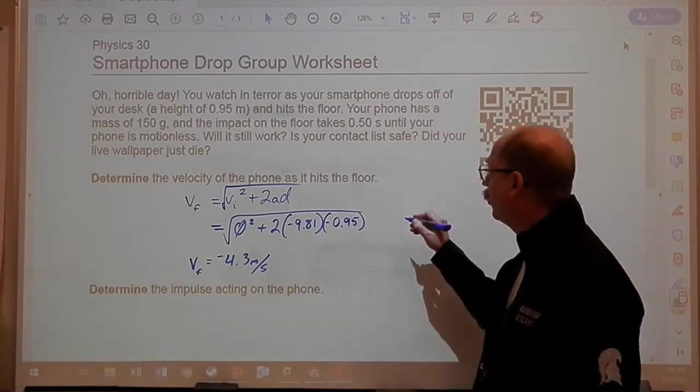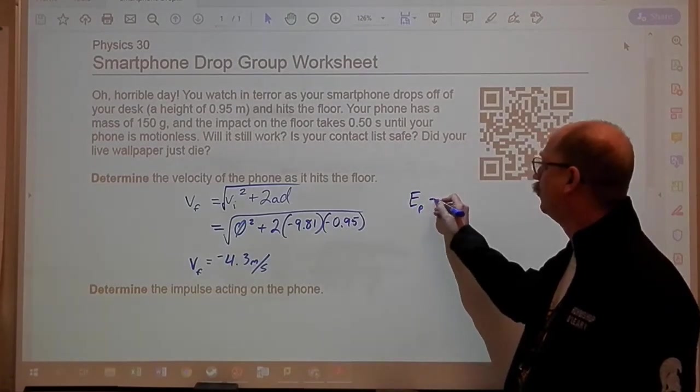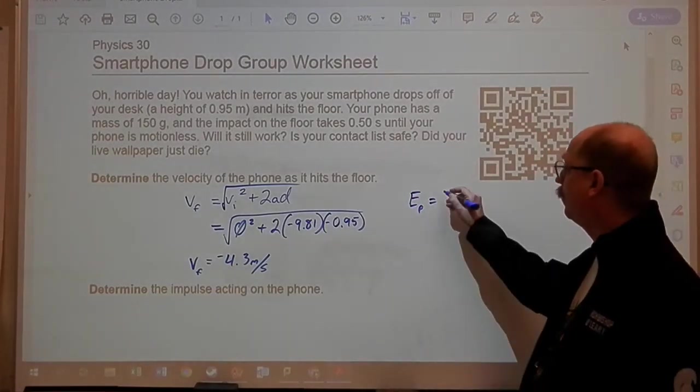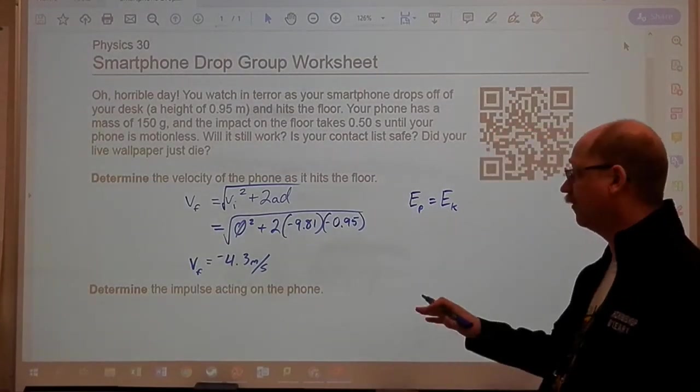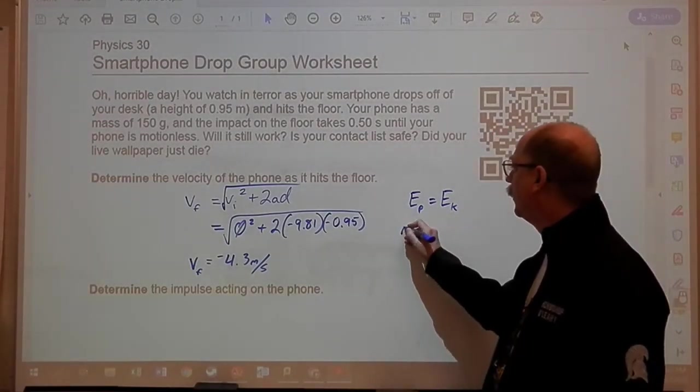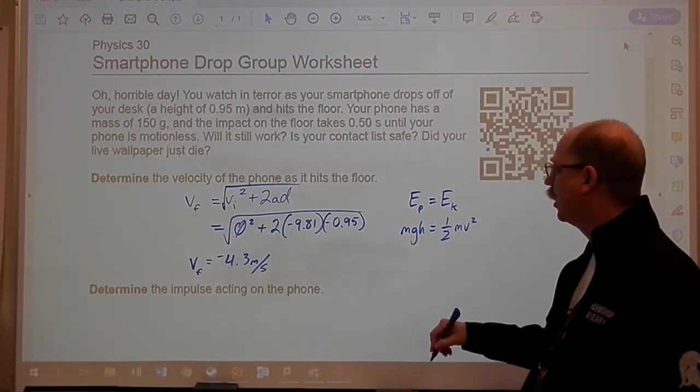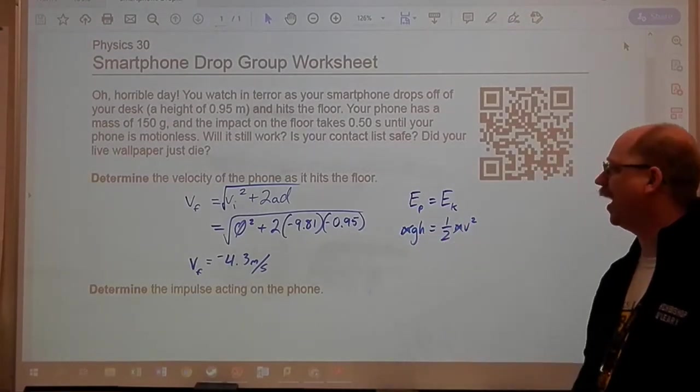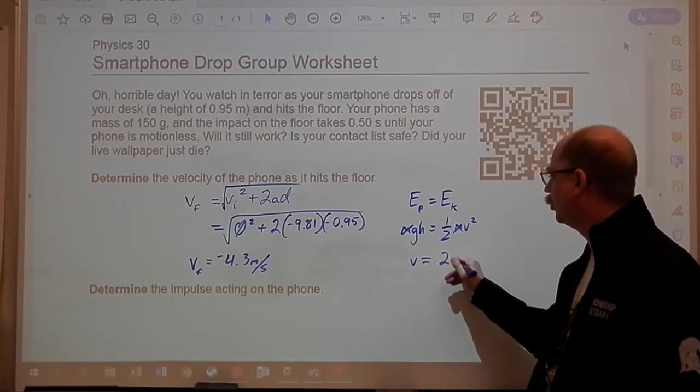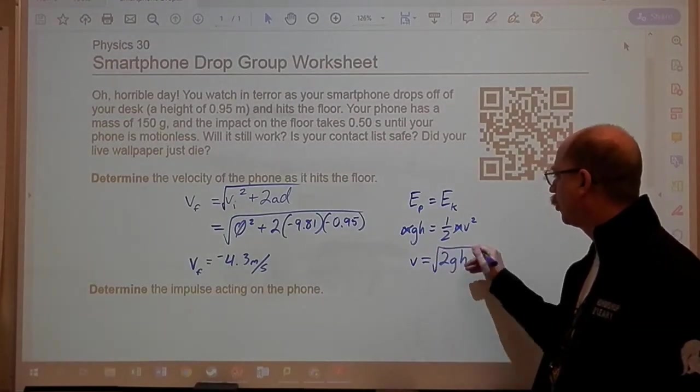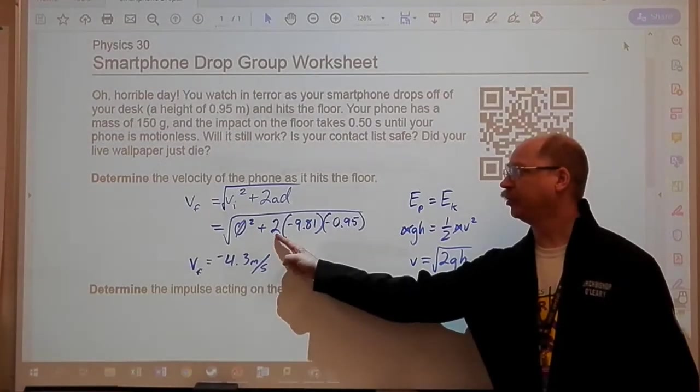The other way that we could go about solving this problem is we could say the phone starts with potential at the top and ends with kinetic as it reaches the floor going the fastest it will ever go. This is mgh. This is one half mv squared. Go ahead and cancel out those masses. And when you manipulate the formula, you'll get 2gh square root of the whole thing, which you'll notice is actually what this is doing, 2gh.